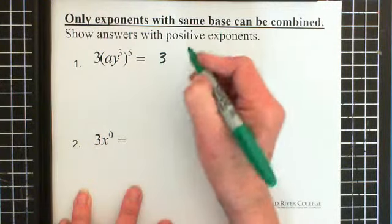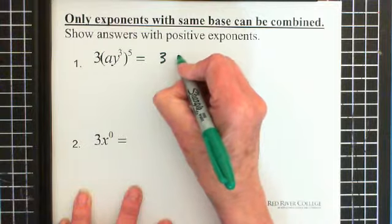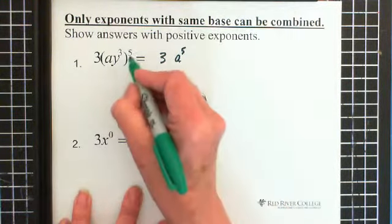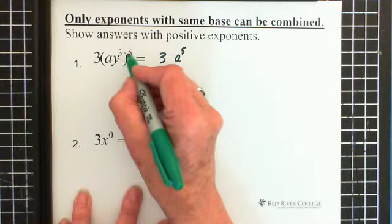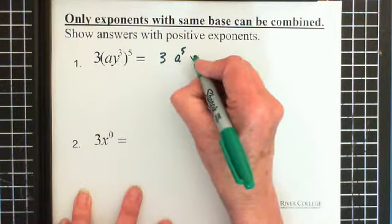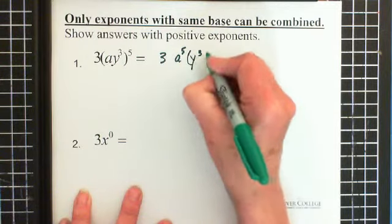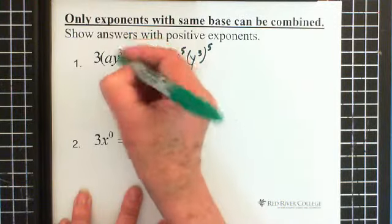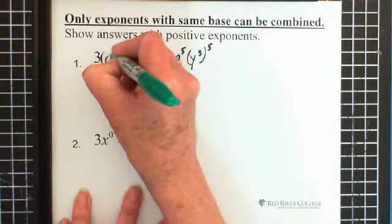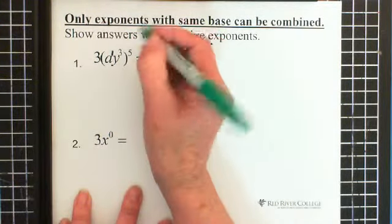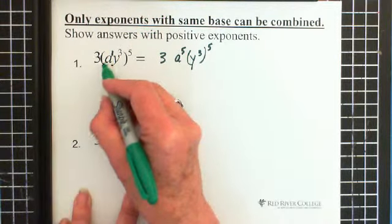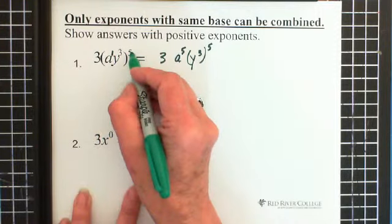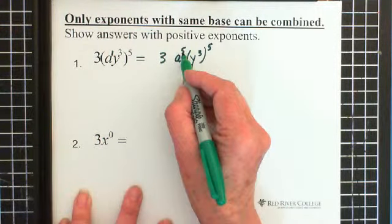3, we end up with a to the power of 5. So the 5 goes on there and then y cubed also has a power of 5. And remember that this a has a power of 1 to it or above it. So this is essentially a power of 1 and that 1 is multiplied by the 5 to give us a to the power of 5.